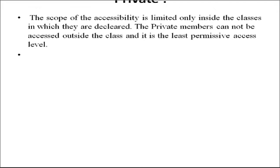The scope of the accessibility is limited only inside the class in which they are declared — this is private. The private members cannot be accessed outside the class. In case of private, the data member cannot be accessed outside the class, and it is used to hide data within the class.